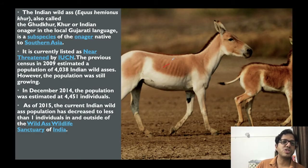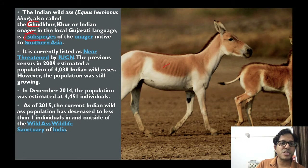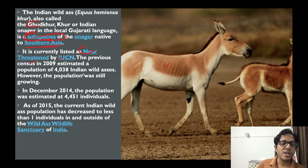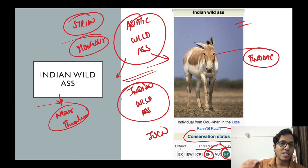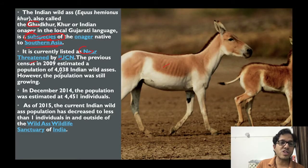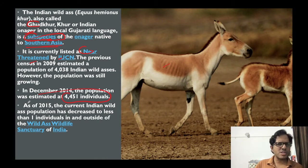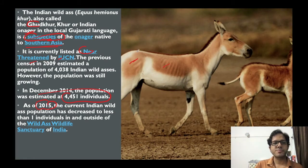Only about 4,400 individuals are found at present. Outside populations are gone - as per 2015 data, this is the only place where they are found now. Indian Wild Ass is endemic to the belt of Run of Kutch at present.